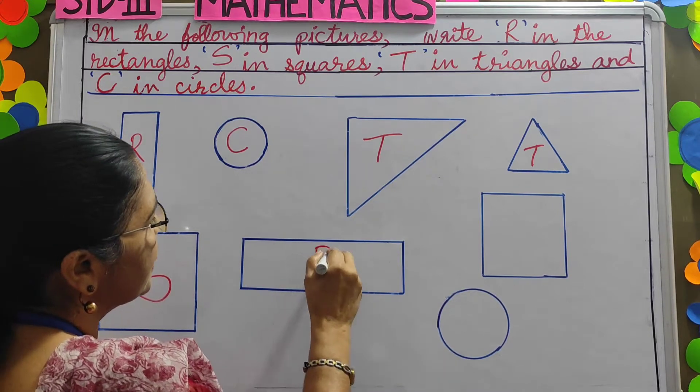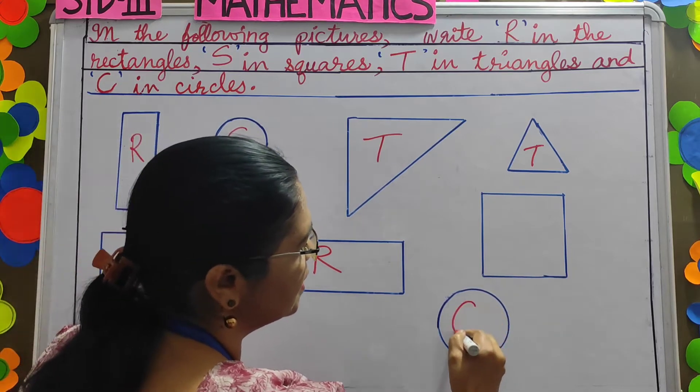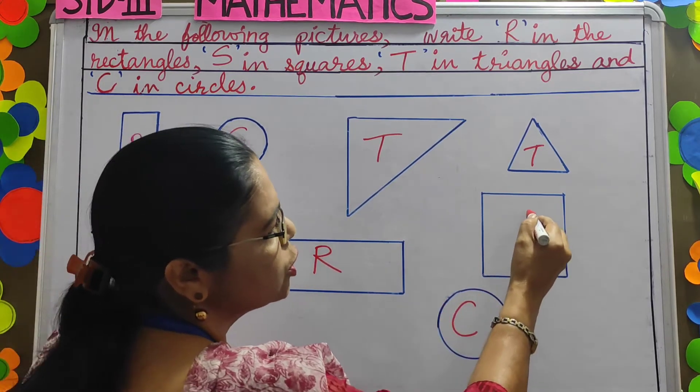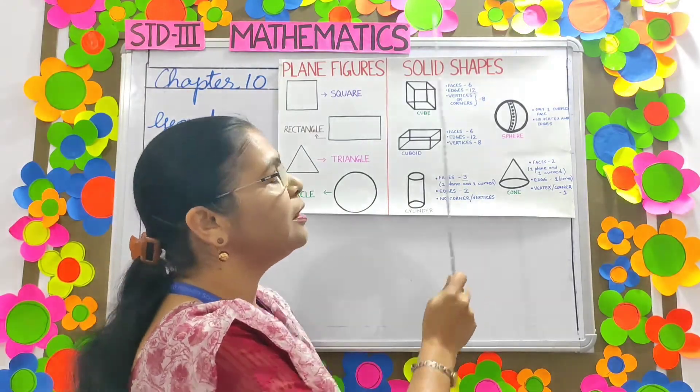It is a rectangle. This children, it is a circle. And the last one, it is a square. Now let's learn about solid shapes.